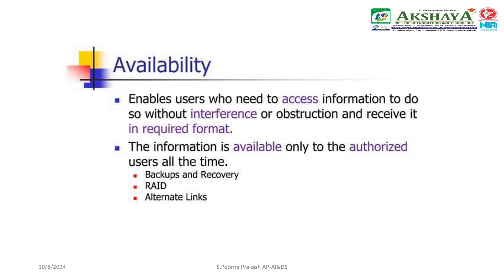Availability refers to the availability of information resources. An information system that is not available when you need it is at least as bad as having none at all. Availability means that people who are authorized to use information are not prevented from doing so. This may depend on how reliant the organization has become on a functioning computer and communication infrastructure. Almost all modern organizations are highly dependent on functioning information systems, and many literally could not operate without them.